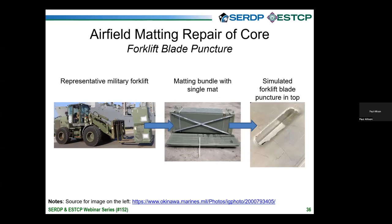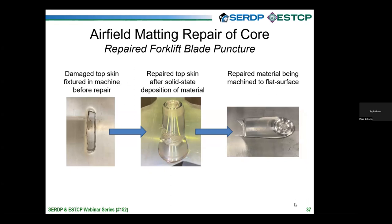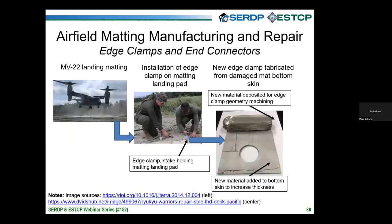As we understand microstructure evolution and mechanical behavior, we looked at field repair applications. Airfield matting materials get damaged — for example, forklift blades can puncture through their skin. We did a simulated forklift puncture, fixtured the mat in our machine, deposited secondary feedstock material to build the hole back up, then machined it back to tolerance. The repair interface is actually hard to see. We've also been doing subscale component tests of repaired sections with our colleagues at Army ERDC.